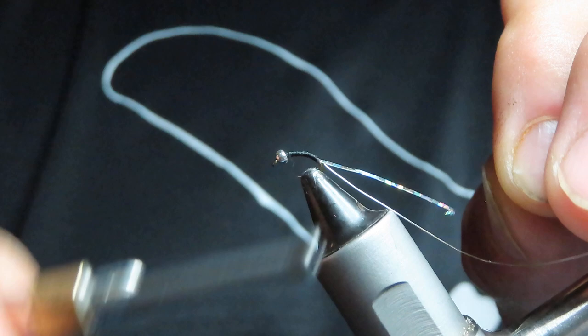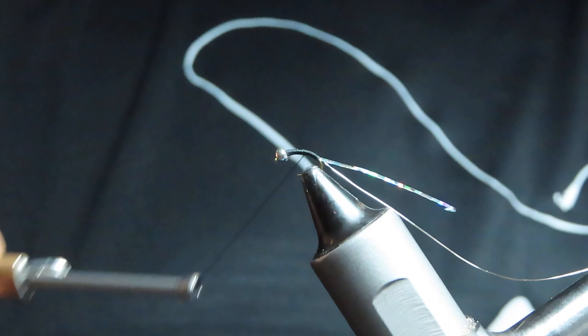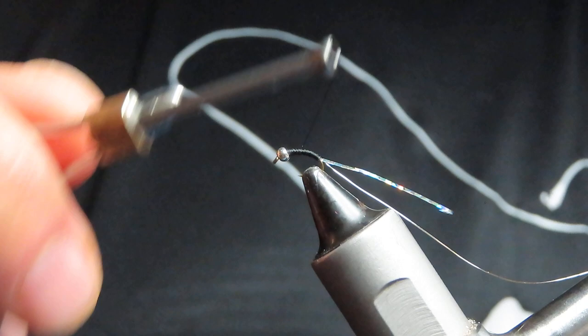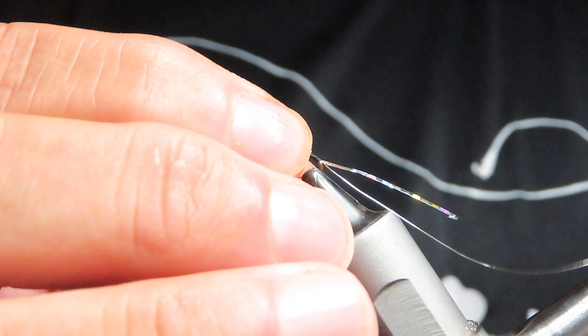Back to the top, and I'm going to work my way back down about three-quarter, still covering up that tinsel. I'm going to create that tapered body all the way back up to the top, back down to about halfway, back to the top, and then a quarter way down and start building up behind that bead head. This should give you a good little tapered look there.